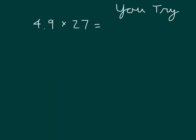Your turn to try. We'll start with that estimate of 4.9, which is close to 5, times 27, which is close to 30, and 5 times 30 is 150. So this is our estimate for that product. Set up an area model and use the standard algorithm to approach this problem. Pause the video.